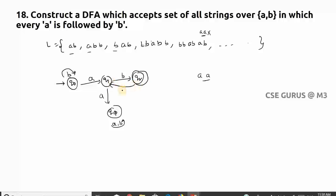So that means q2 to 'a' I'm searching for 'b'. But after q2 to 'a', if I get 'a' again it is going to non-final state - that is the thing. And what about q2 to 'b'? I can have any number, that's why self-loop. There is no constraint for that.